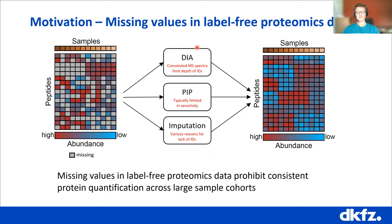For DIA, the data are highly convoluted and difficult to interpret, although there are very powerful and ever increasingly powerful approaches that can handle these data. Peptide identity propagation has been around for a longer time and has been very useful in workflows like MaxQuant, but typically suffers from limited sensitivity. Imputation is a popular approach to replace missing values by either zeros or by estimating intensities, but the limitation is that absence of data can have many reasons and you need to select the appropriate imputation tool.